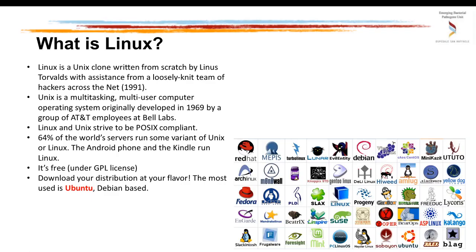What is Linux? Linux is a Unix clone written from scratch by Linus Torvalds in 1991 in Finland. Unix is a multi-tasking, multi-user computer operating system developed at Bell Labs. Both operating systems, Linux and Unix, are POSIX compliant. Most servers in the world are running on Unix and Linux, and even our Android phones are based on Linux.